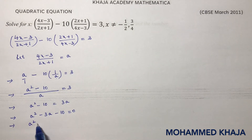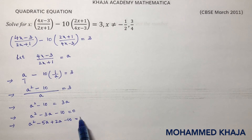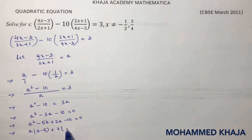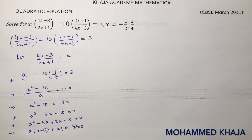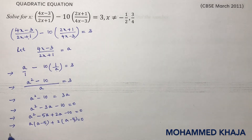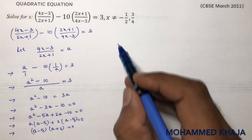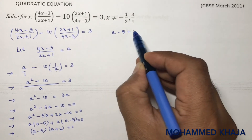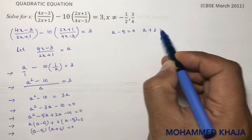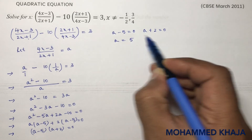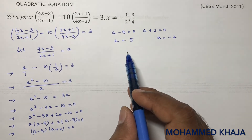Factorizing a squared minus 3a minus 10: 10 factors as 5 times 2, so we split the middle term as minus 5a plus 2a minus 10 equals 0. Taking a common from the first two terms gives a(a minus 5), and 2 common from the last two gives 2(a minus 5). So (a minus 5)(a plus 2) equals 0, giving a equals 5 or a equals minus 2.